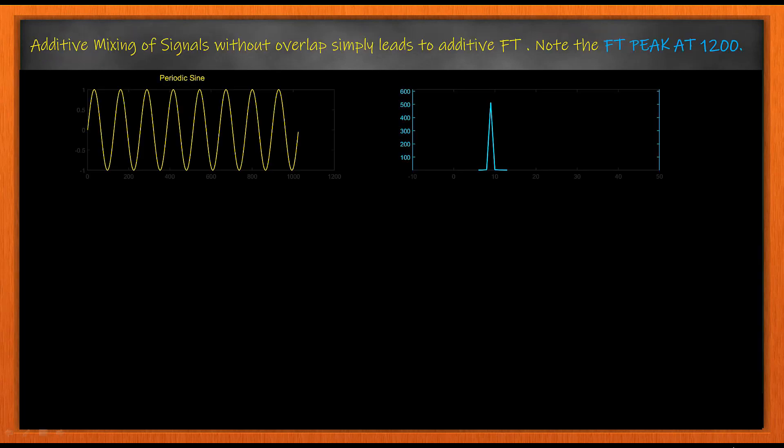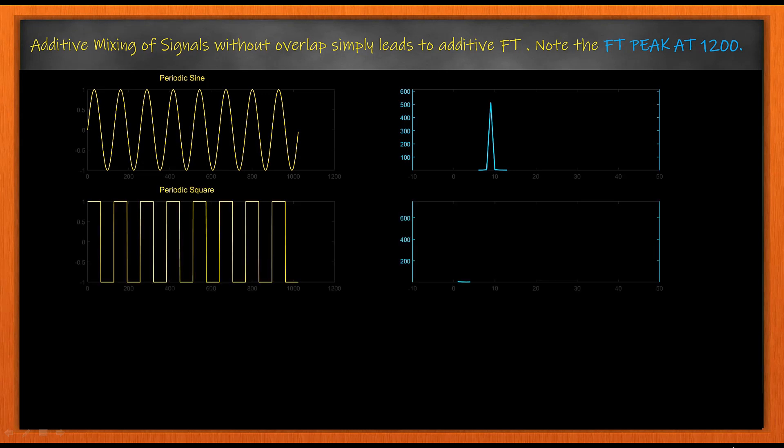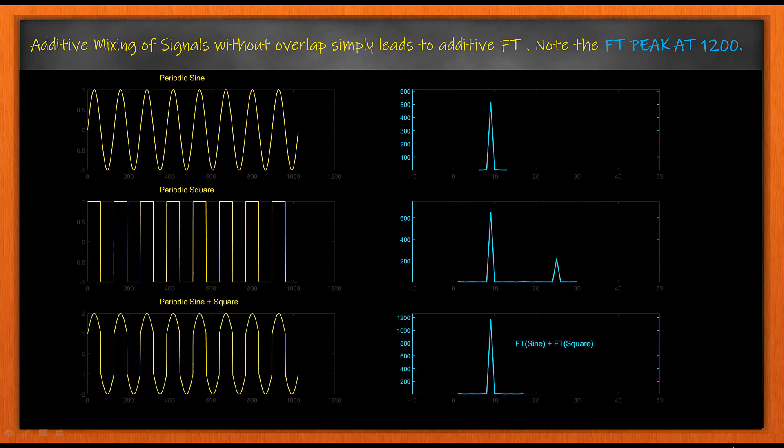Next we have additive mixing of signals without overlap. So we have a periodic sine, we have a periodic square, then we have a periodic sine plus square. And note the peak at 1200 which is the sum of 600 plus 600.